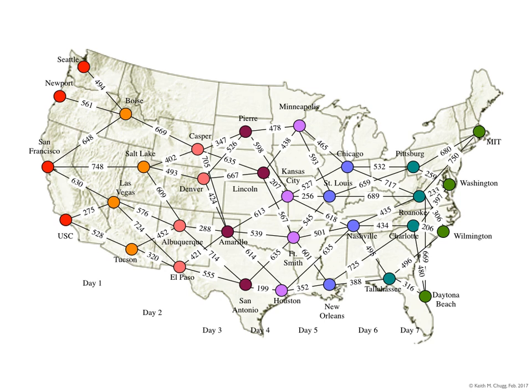I've considered four possible cities that you could start with on the west coast: Seattle, Newport, San Francisco, and Los Angeles, which I've labeled USC. And I only want to drive less than 750 miles a day each day.